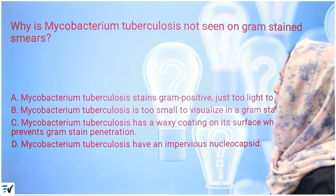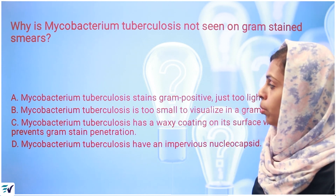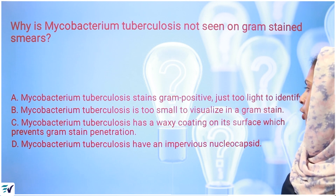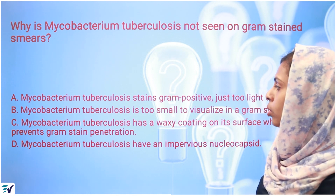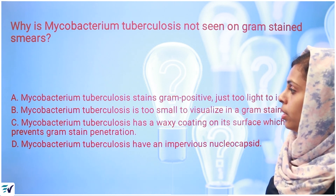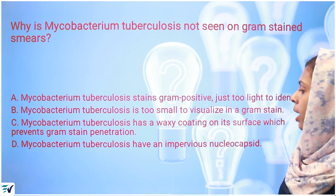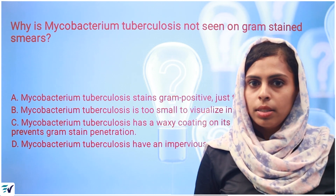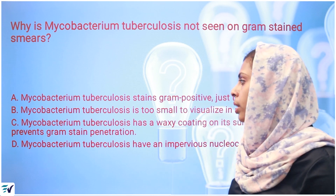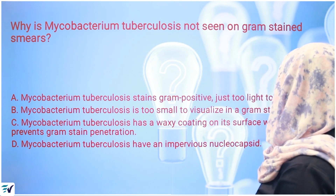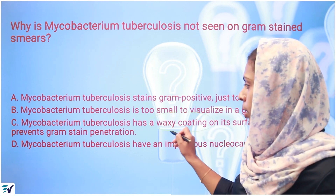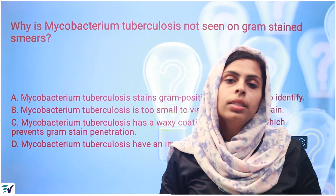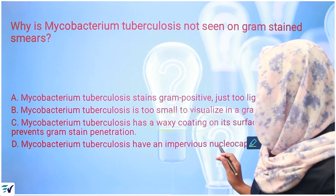Next question: Why is Mycobacterium tuberculosis not seen on Gram stain smears? The correct answer is that Mycobacterium tuberculosis has a waxy coating on its surface which prevents Gram stain penetration. So the answer is C.